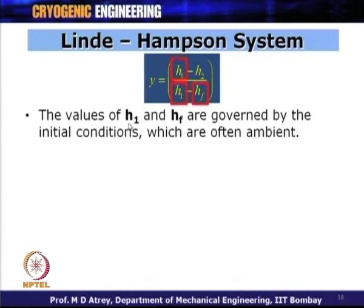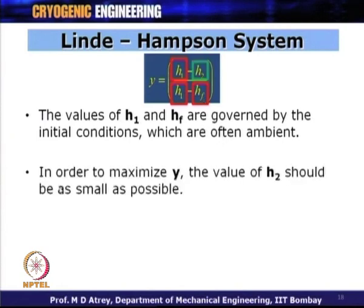In order to maximize Y, H_2 should be as small as possible, i.e., H_1 − H_2 should be as large as possible. Since H_1 − H_F is fixed once initial conditions are fixed, the numerator must be maximized. H_2 is the enthalpy after compression and depends on the pressure after compression. To have minimum H_2, the condition del H / del P at constant temperature T_1 should equal zero.